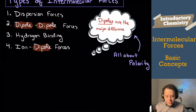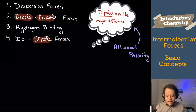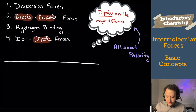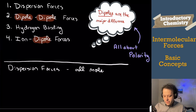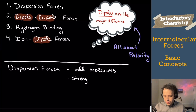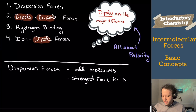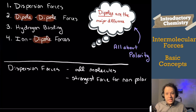The first type is dispersion. Dispersion is a force that occurs between all molecules — anything with electrons. Even though it occurs between all molecules, it is the strongest force for non-polar molecules. Whenever we have a non-polar molecule, dispersion is the only intermolecular force it's capable of experiencing.